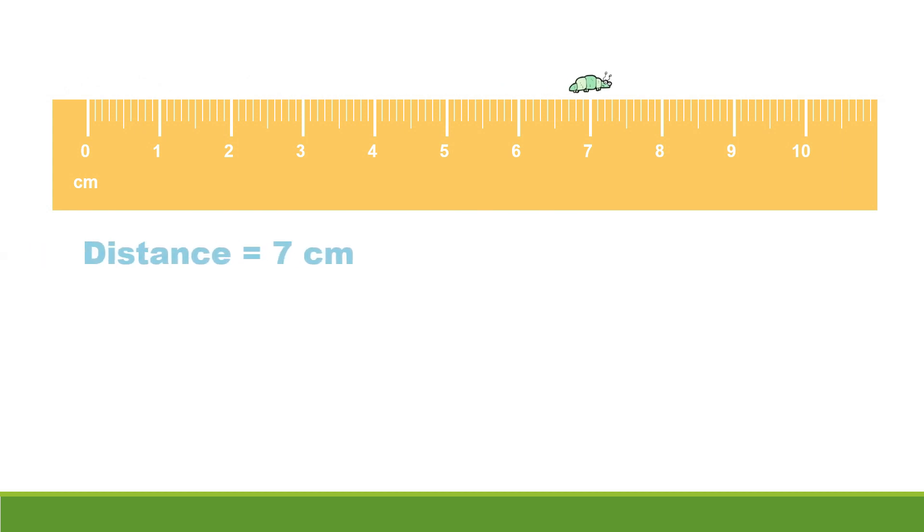Going back to our bug, what is its displacement? Displacement is a vector, so we have to consider its direction. So we have to consider the positive and negative signs. So what's the displacement? Since we move to the right 7 centimeters, we get positive 7 centimeters or 7 centimeters east.